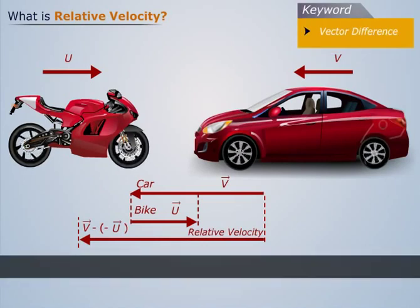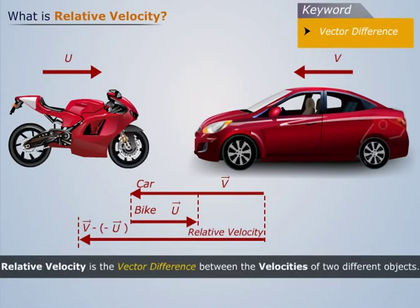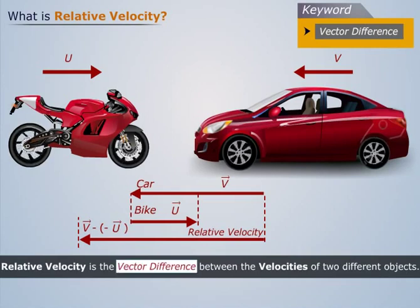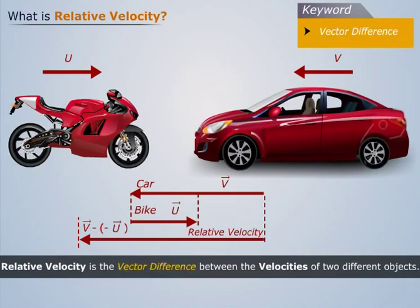Thus, we can say that the relative velocity is the vector difference between the velocities of two different objects.